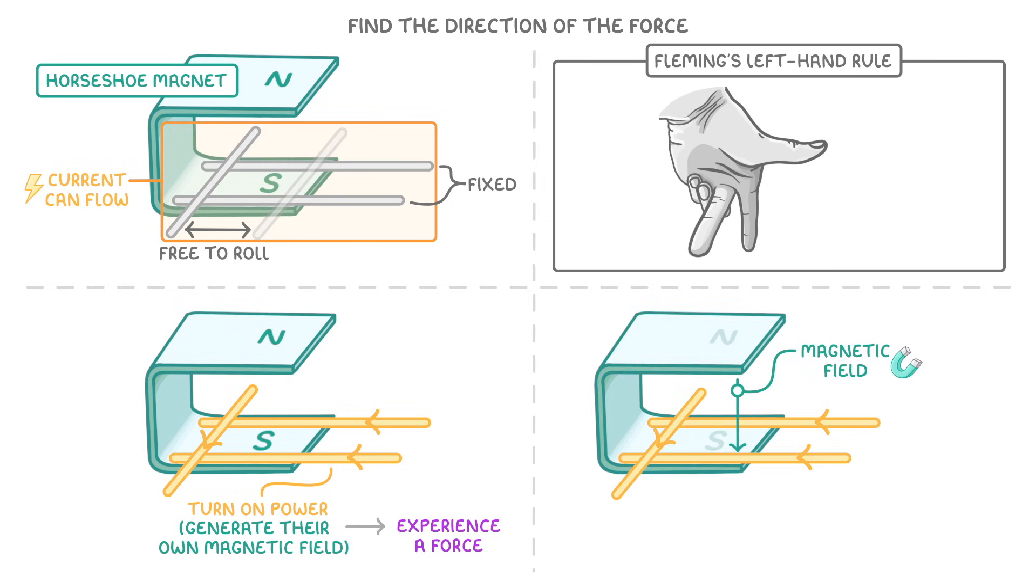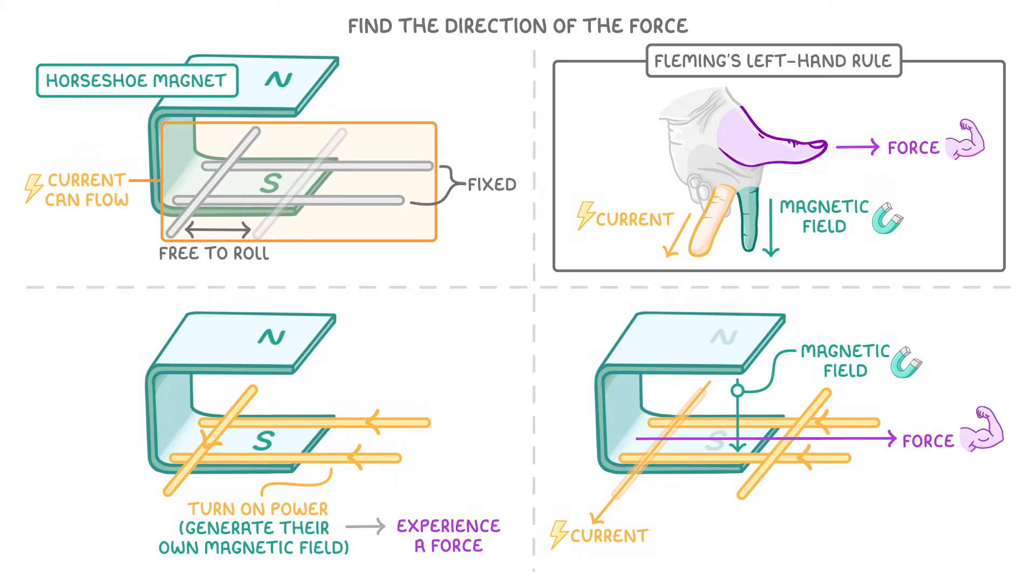As the magnetic field is pointing downwards, from north to south, so will our first finger. And as the current is flowing through this rail towards us, we have to orient our second finger towards us, and hopefully your thumb will now be pointing to the right, which is the direction of the force.